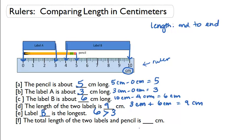The total length of the two labels and the pencil is blank centimeters. The pencil is 5 centimeters, label A is 3 centimeters, and label B is 6 centimeters. When we add all of that together we get 14 centimeters. So the total length is 14 centimeters.